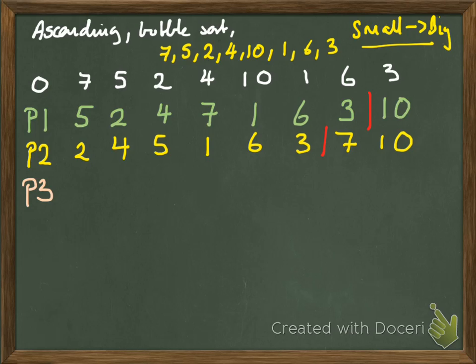Pass 3. 2 and 4, that's fine. 4 and 5, that's fine. Consider 5 and 1, swap. 5 and 6 remains as it is. 6 and 3, swap. 6 and 7 remains as it is, and 10.